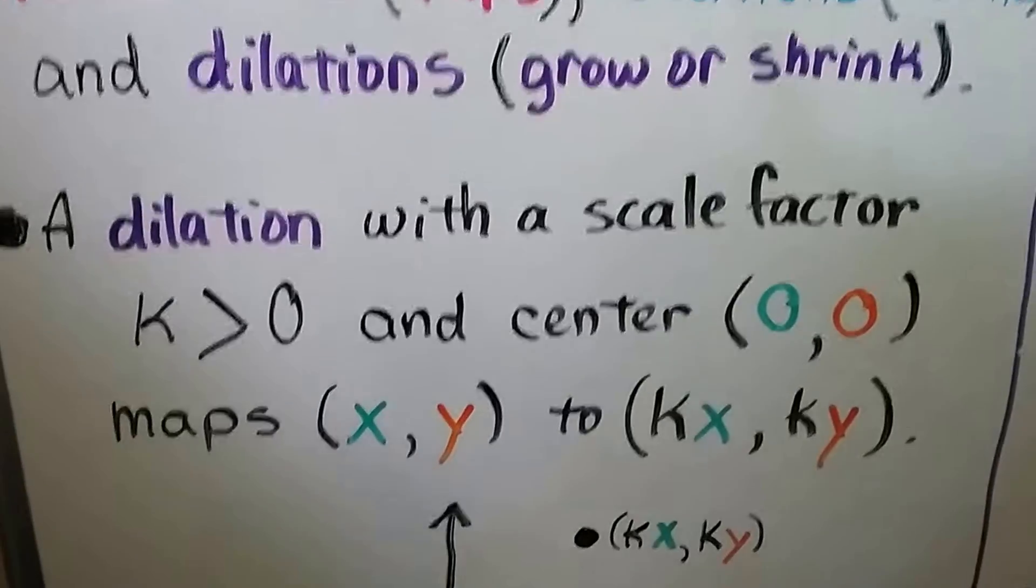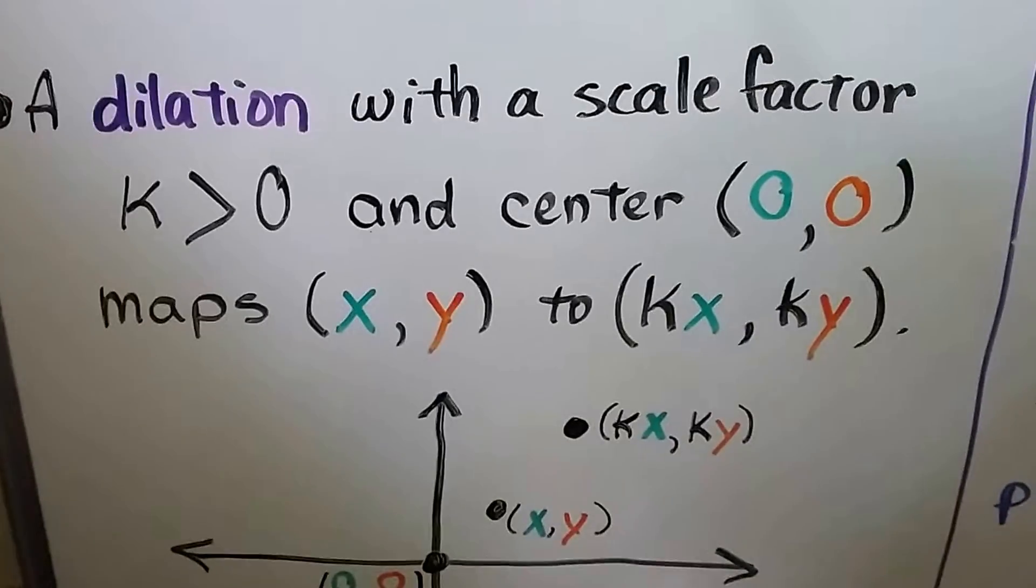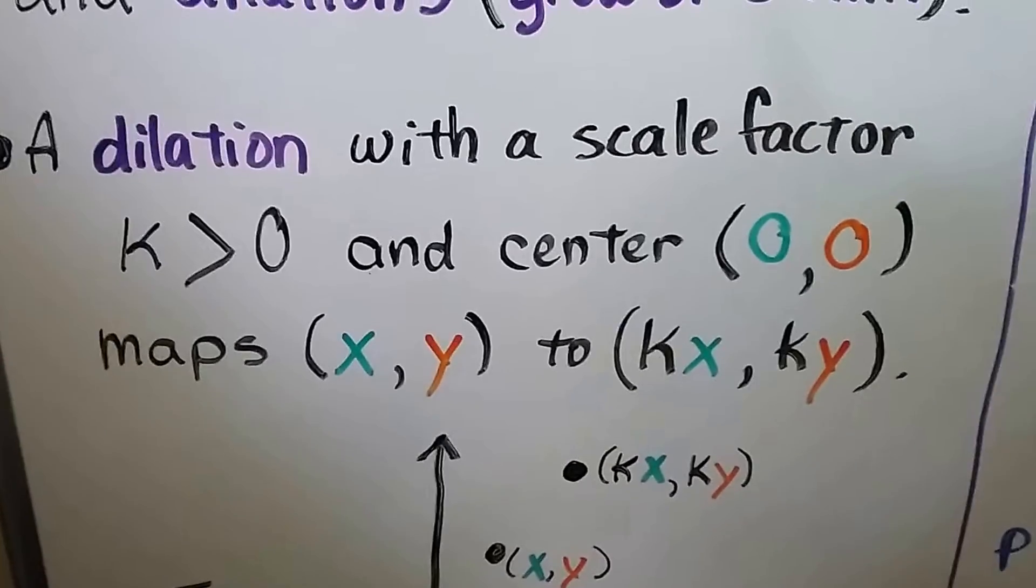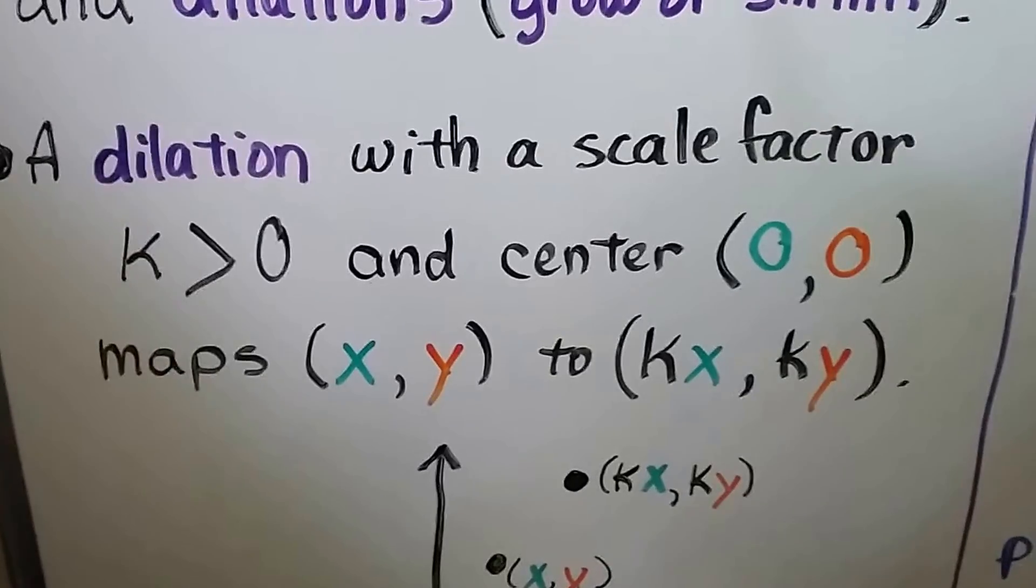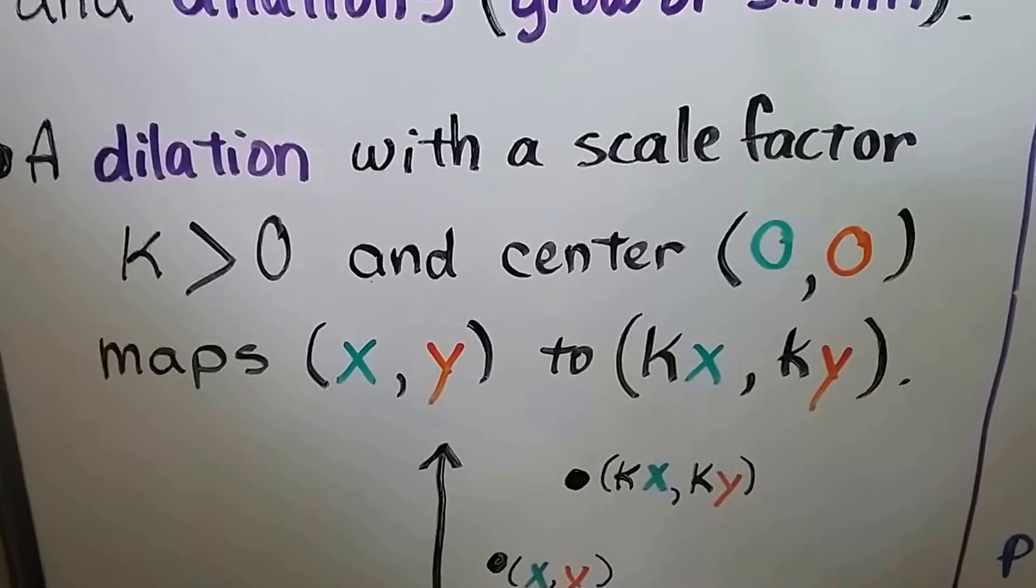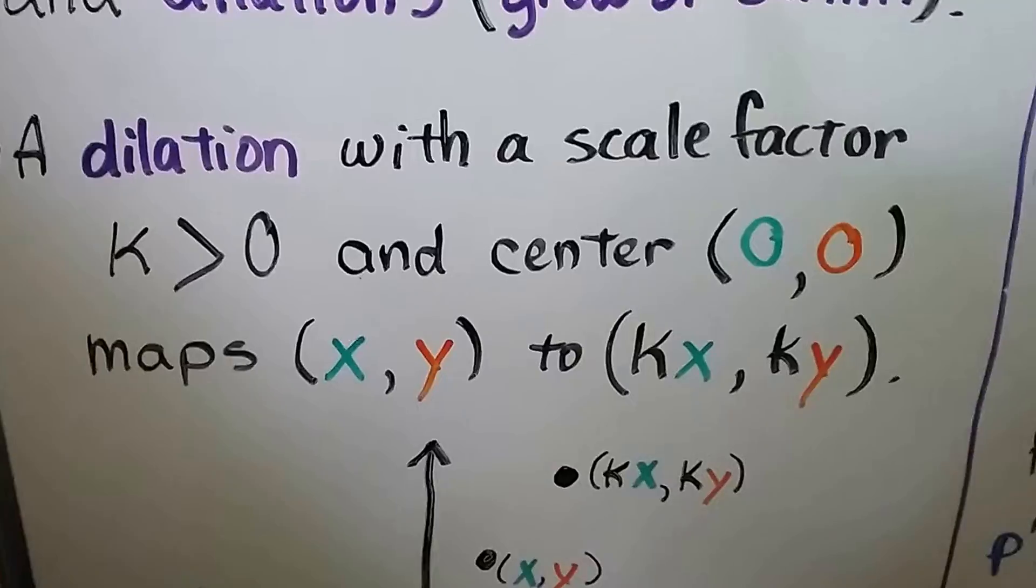A dilation with a scale factor of k is greater than 0, and a center (0, 0), that would be the origin. It maps (x, y) to (kx, ky).